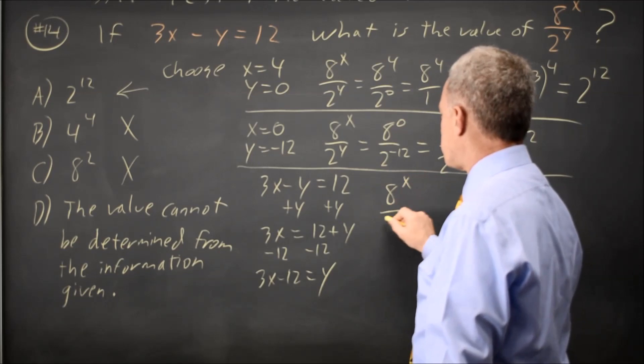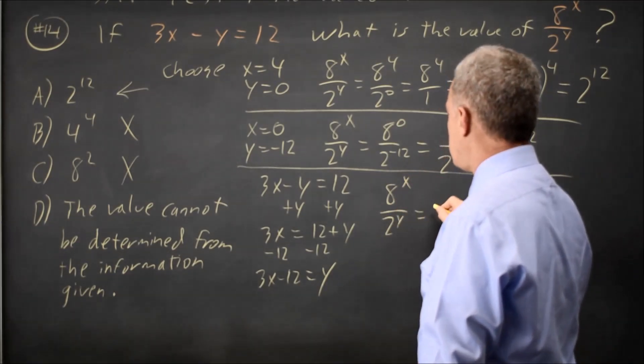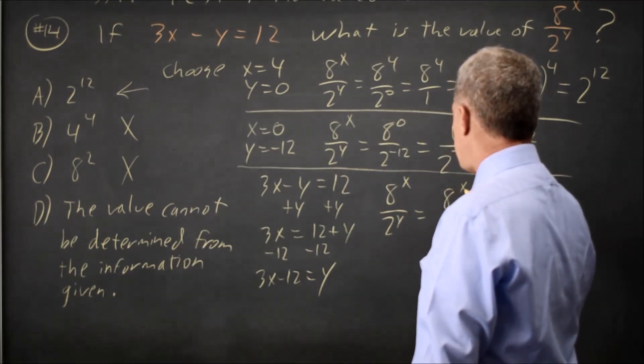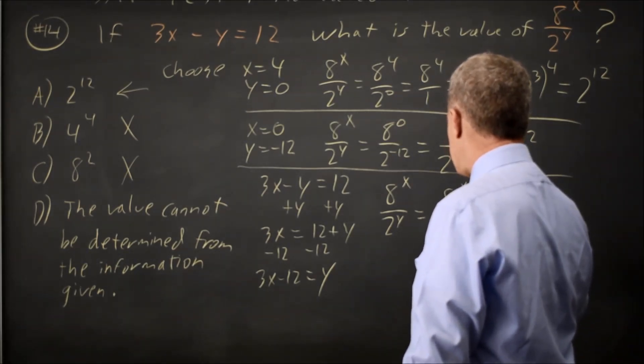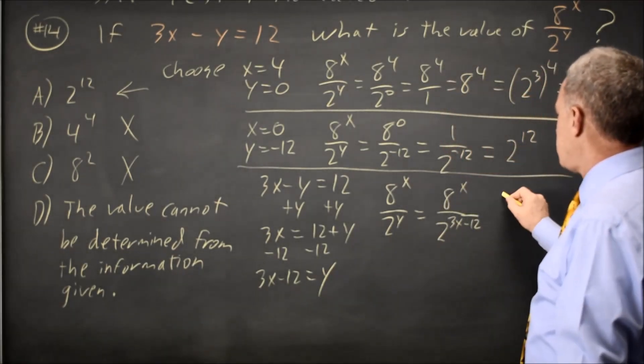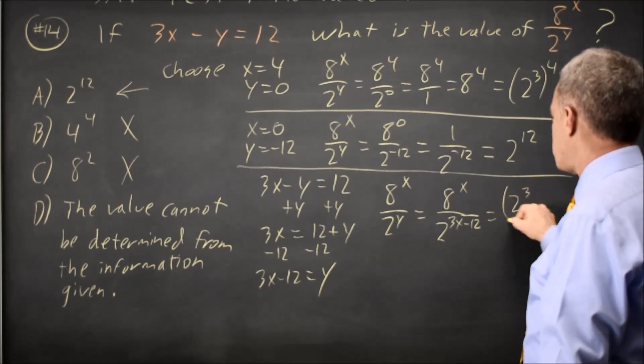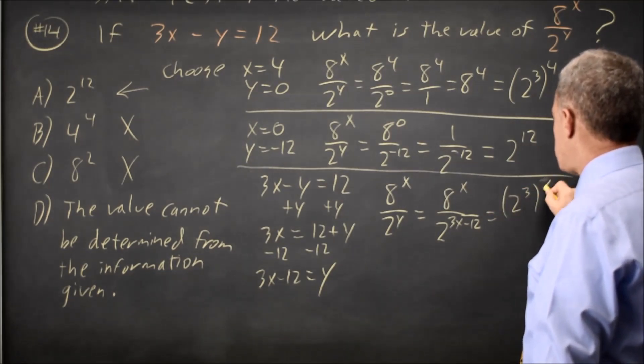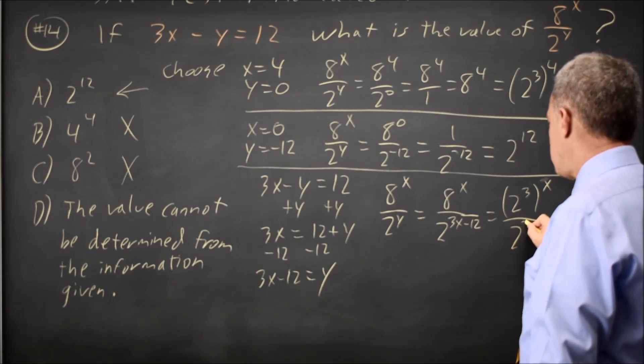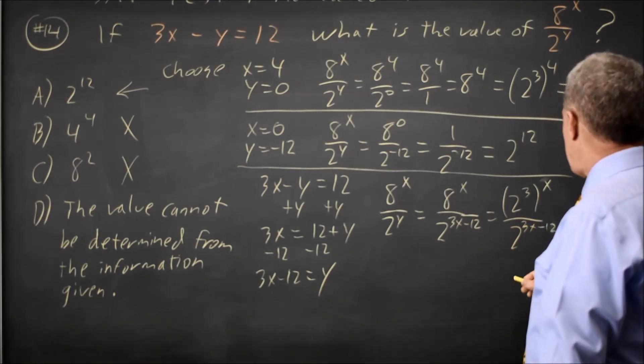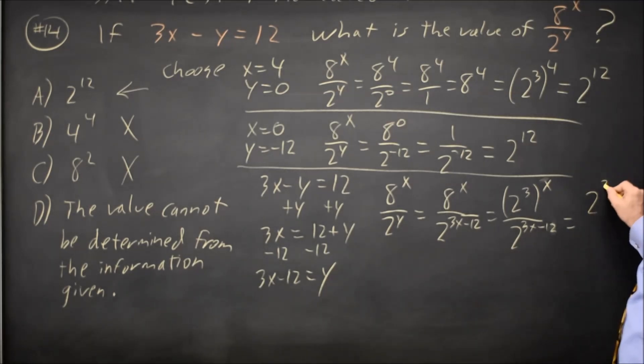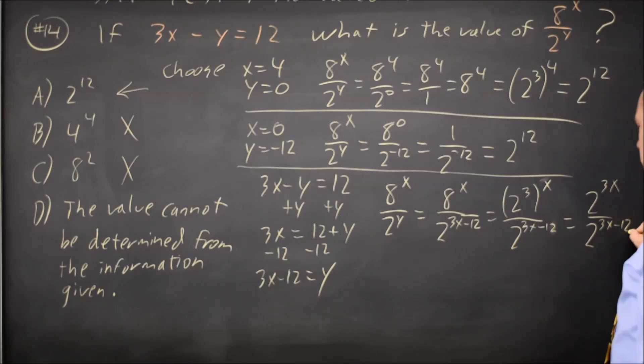Now, 8 to the x over 2 to the y is 8 to the x over 2 to the 3x minus 12. And we saw before that 8 is 2 cubed. So it's 2 cubed to the x over 2 to the 3x minus 12. And power of a power, you multiply exponents, so that's 2 to the 3x over 2 to the 3x minus 12.